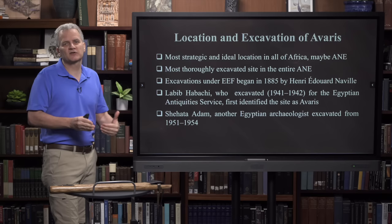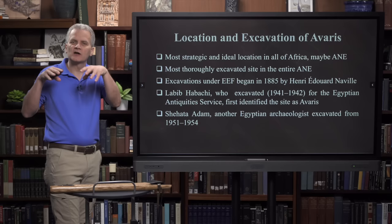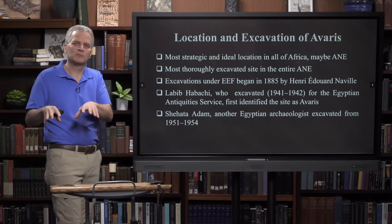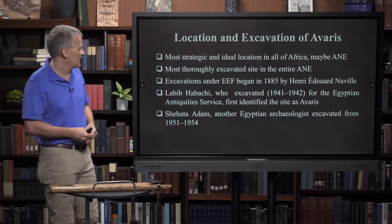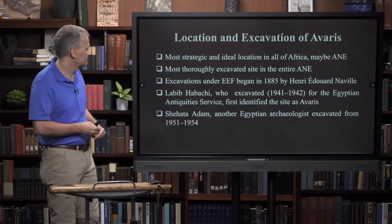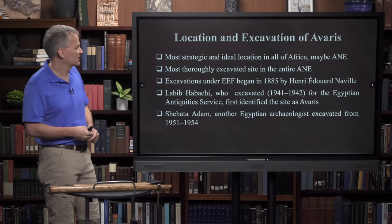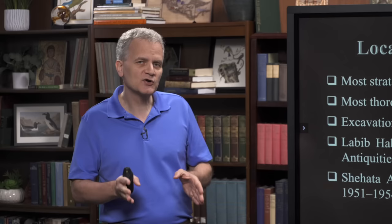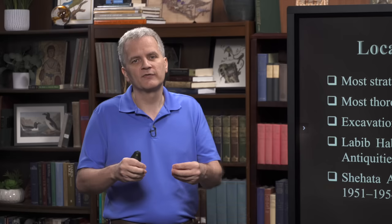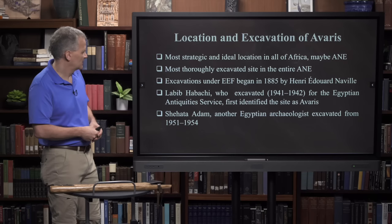Avaris is the most thoroughly excavated site in the entire ancient Near East - there's no other site that's been excavated more than this. In God's sovereign plan, the place where Jacob settled his family and they lived for over four centuries would be more thoroughly excavated than anywhere else. Excavations began there by the Egypt Exploration Fund in 1885 under a Frenchman named Henri Naville, who did some light archaeological work. Then Labib Habachi excavated there from 1941 to 1942 for the Egyptian Antiquity Service, and he was the first to identify the site of Avaris with Tel El Daba.